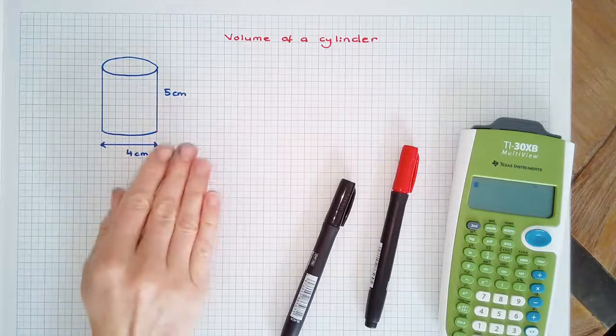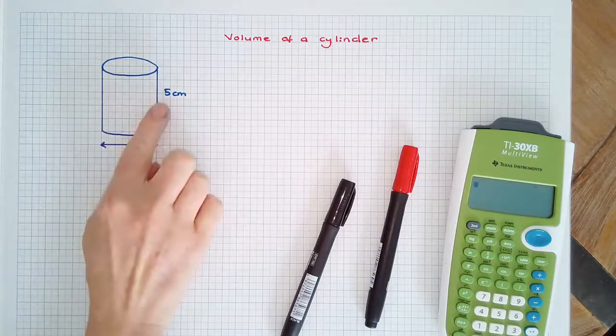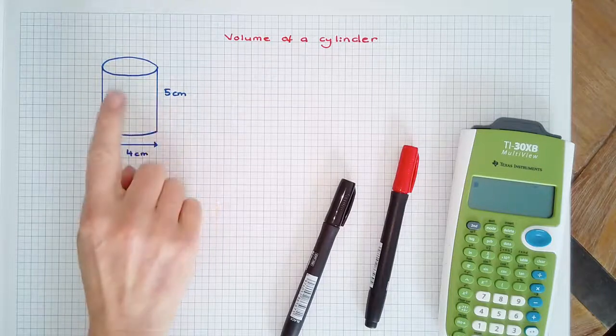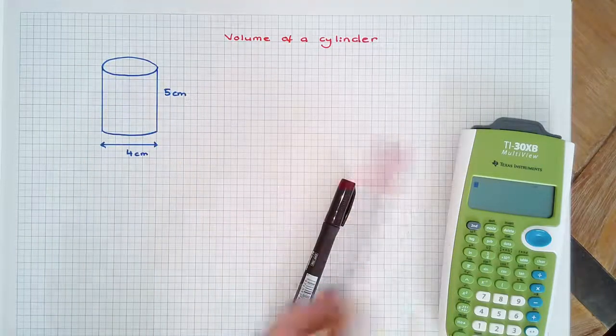Whilst a cylinder is not a prism, as it doesn't have sides that are flat surfaces, we can use the formula for the volume of a prism to find the volume of a cylinder.